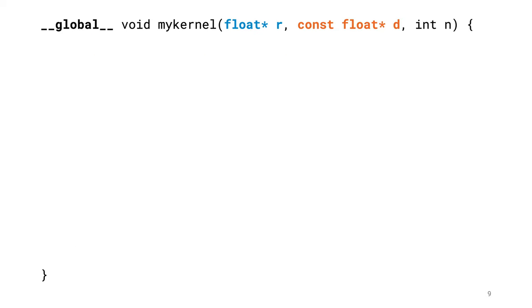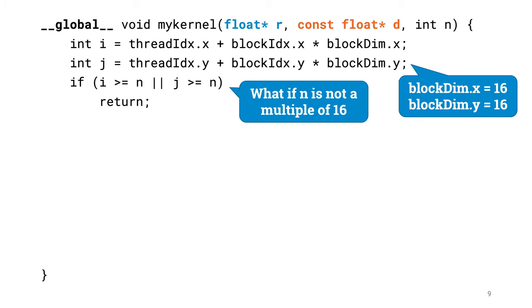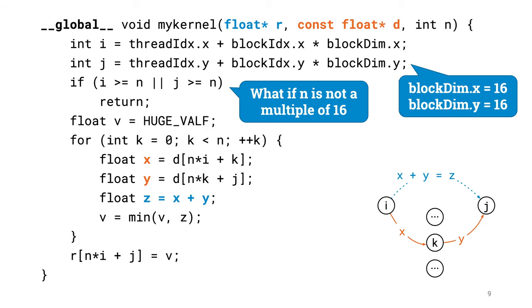So, now we are ready to implement the kernel. As usual, we start by checking who we are and calculating what to do. And as we just discussed, we will just return from the kernel early if there is nothing to do for us. And that's basically it. The rest is just direct copy-paste from our CPU solution, and we are done.